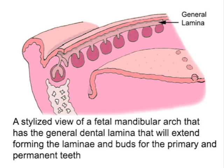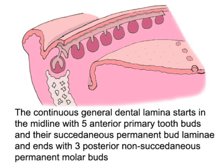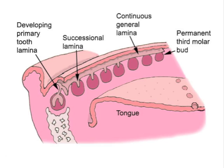This shows a fetal mandibular arch with the continuous general dental lamina that will extend to form the laminae and buds for the primary and the permanent teeth. The general lamina starts in the midline with five anterior primary tooth buds and their succedaneous permanent bud laminae, and ends with three posterior non-succedaneous permanent molar buds.